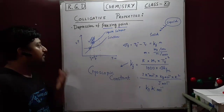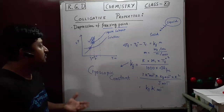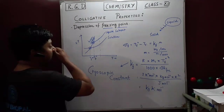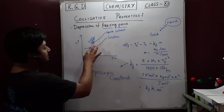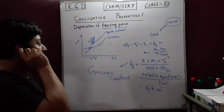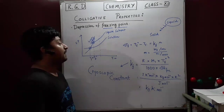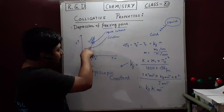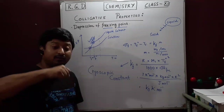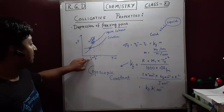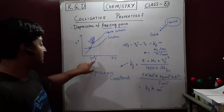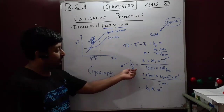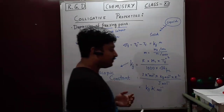The significance of this graph: you have a liquid solvent and a frozen solvent. This intersection point is the melting point of the pure solvent — this is Tf0. When the solvent contains solute molecules, this is the line of the solution. The intersection of the solution line with the frozen solvent line gives the new melting point Tf. So the melting or freezing point has changed from Tf0 to Tf — that is the depression of the freezing point, and Kf is the cryoscopic constant.